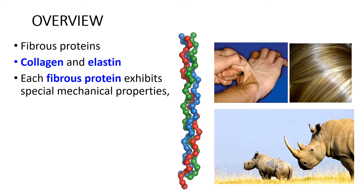The basic structure of all collagen is a triple helix. However, collagen can be grouped into at least 16 types based on the three-dimensional structure formed at points where the helix is interrupted. Collagen and elastin are examples of common, well-characterized fibrous proteins of the extracellular matrix that serve a structural function in the body.